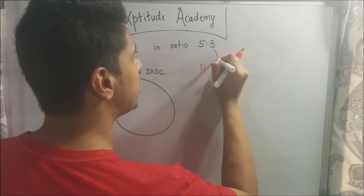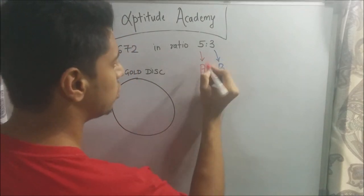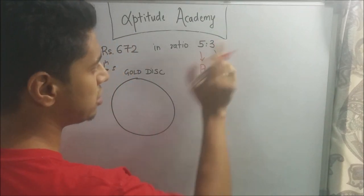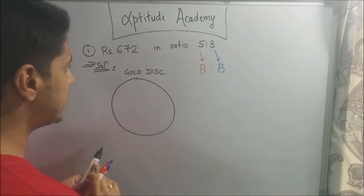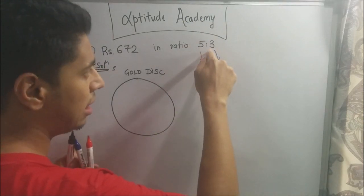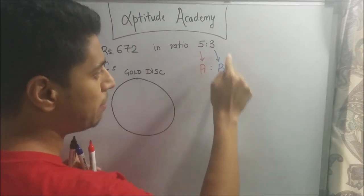So, B should get 3 and A should get 5. So, the ratio A to B should be 5 is to 3. Now, what I can do is I can make 8 parts, right? 5 plus 3. And I can give 5 parts to A and 3 parts to B.